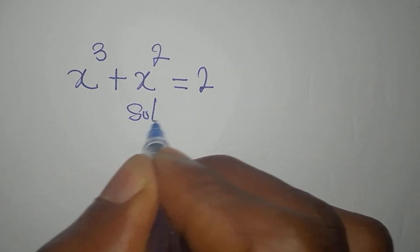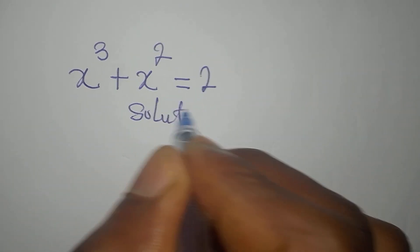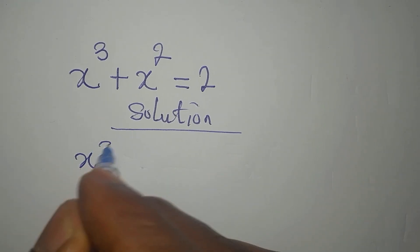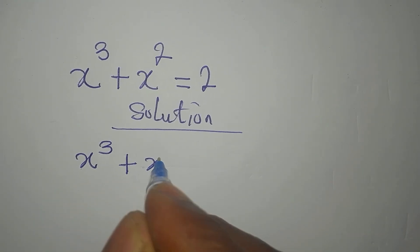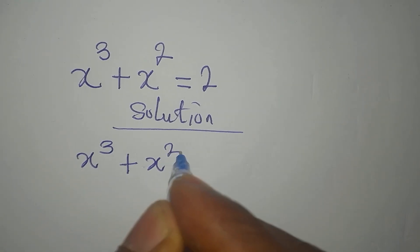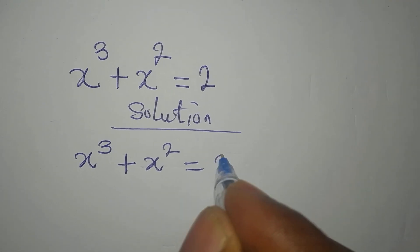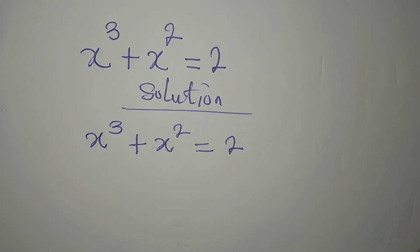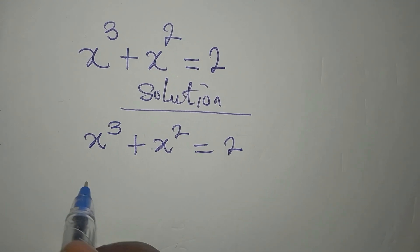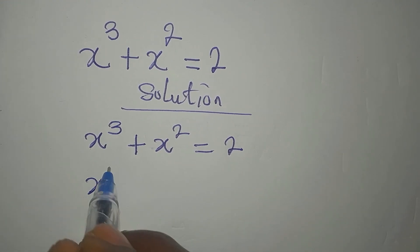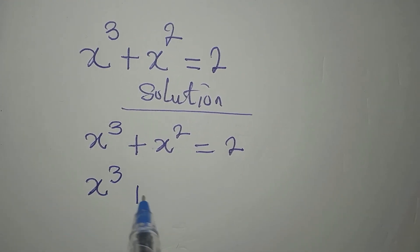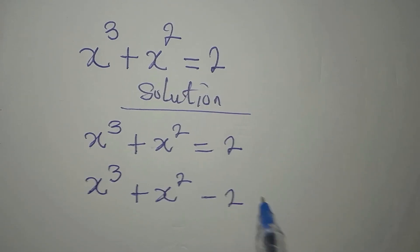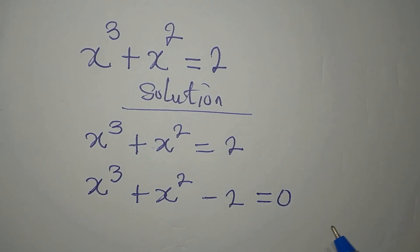Hi everyone. Let's solve this problem right away. x to the power of 3 plus x to the power of 2 equals 2. The first step is to bring this to the left: x to the power of 3 plus x to the power of 2 minus 2 equals 0.